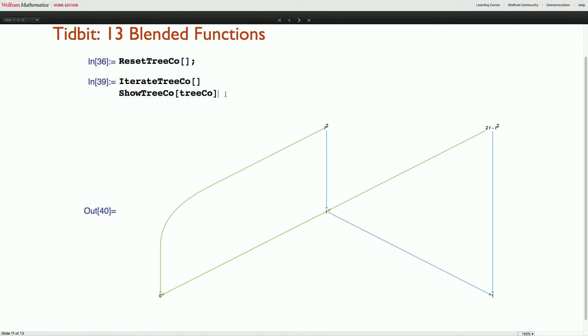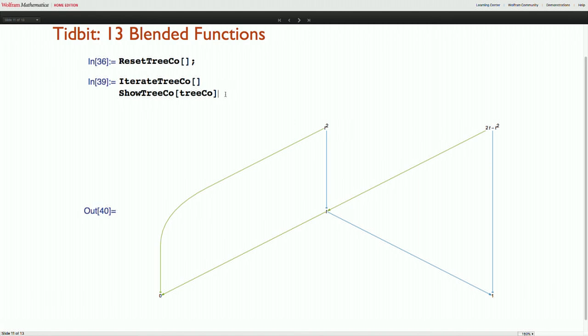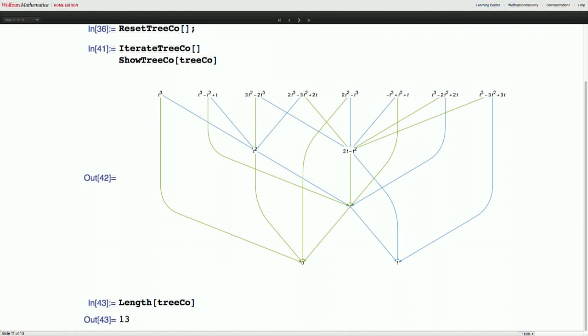Here's the t squared and the inverse t squared. You can go another step, combine all the existing ones. And what do you know? There's 13 of these. So there's my 13. And this goes pretty quickly.